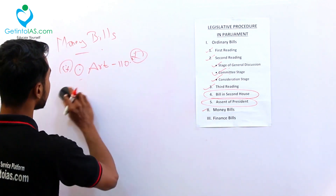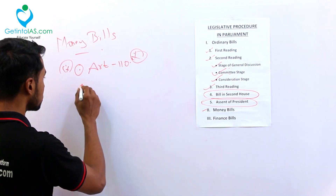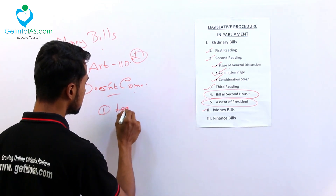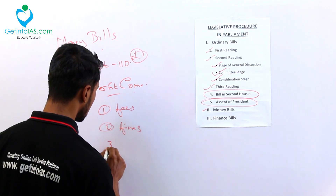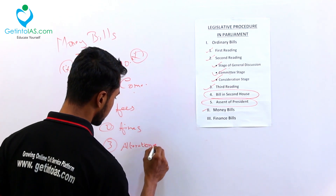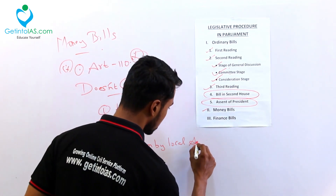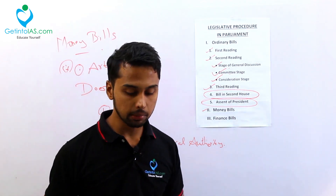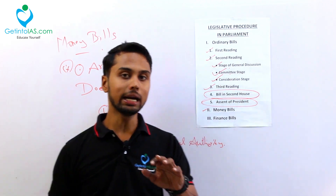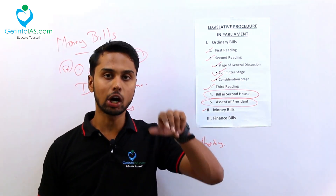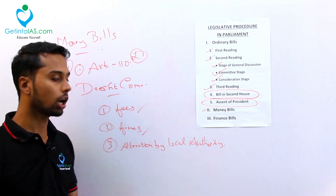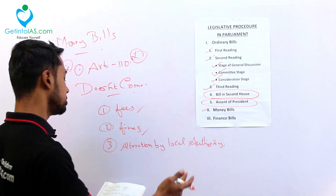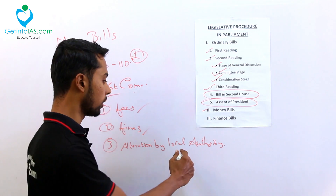Very importantly, what does NOT come under money bill? First is fees. Second is fines. Next is alteration by local authority. The government of India will have some fees - for example, for writing UPSC you will be paying a fee of 100 rupees, and that will not come under money bill. Government fees will not fit into money bills. Fines also - if you are not wearing a helmet and the traffic police is fining you, that will not come under money bill. Imposition, abolition, remission, alteration or regulation of any tax by your local authority also will not come under your money bill.